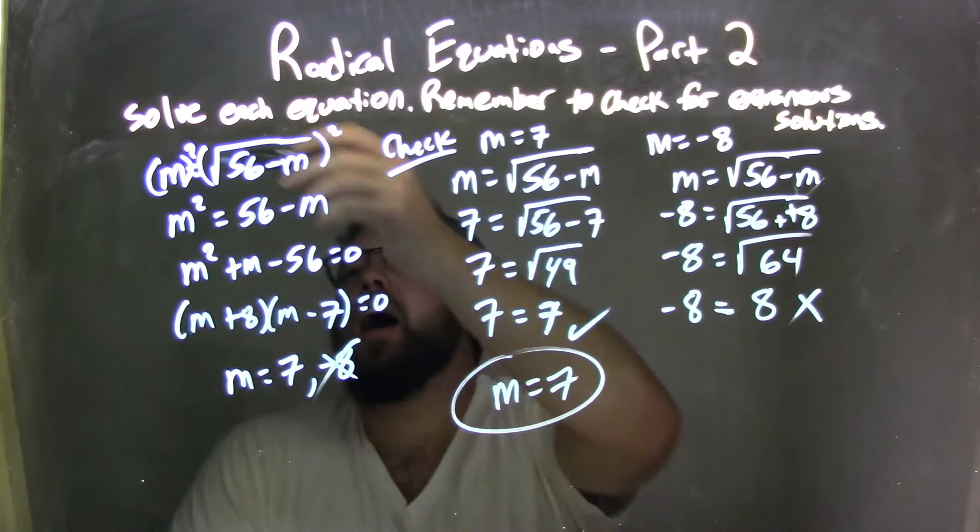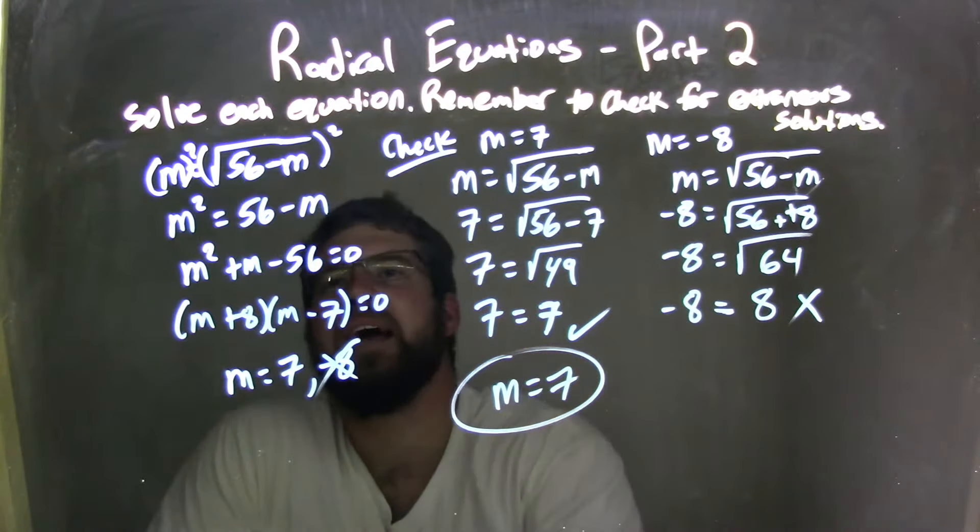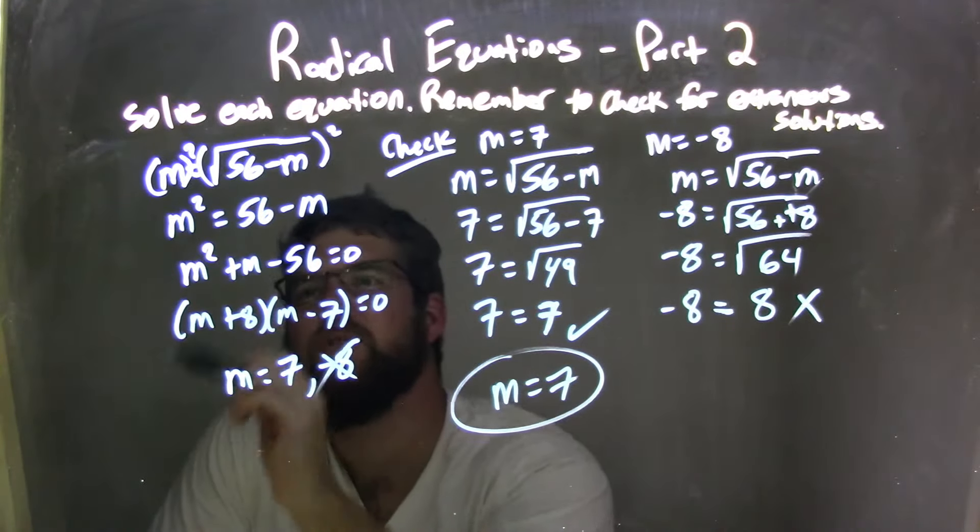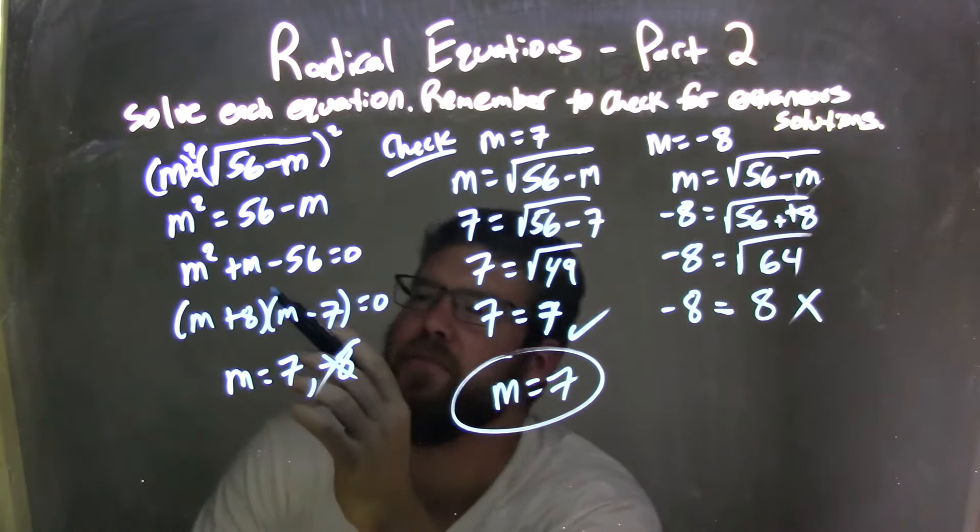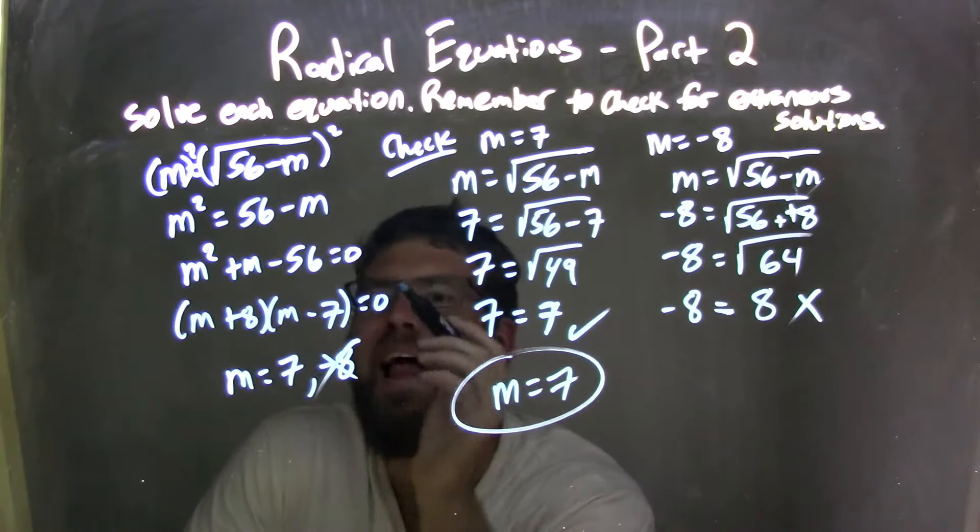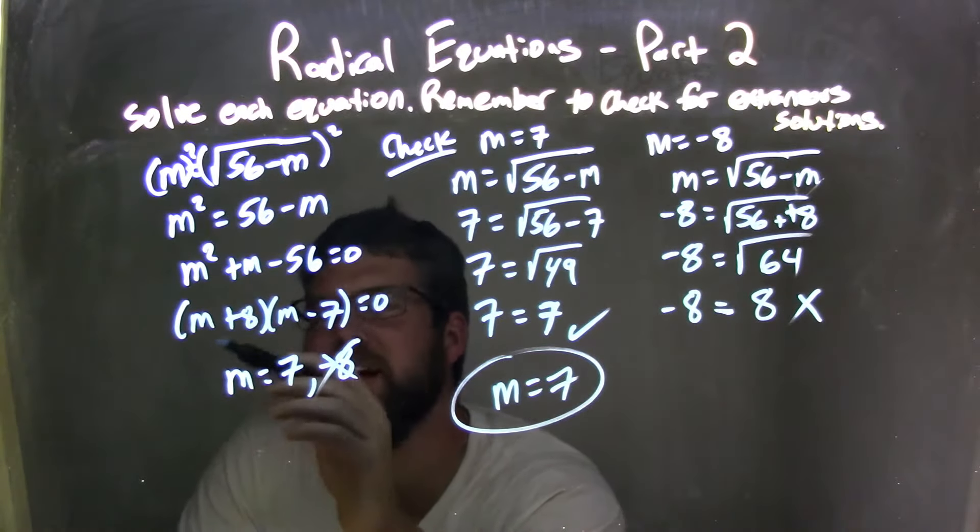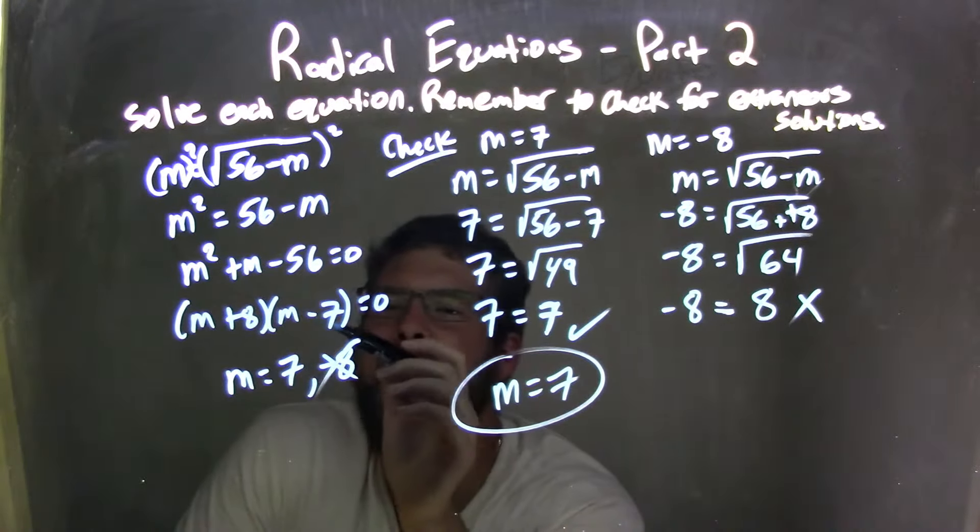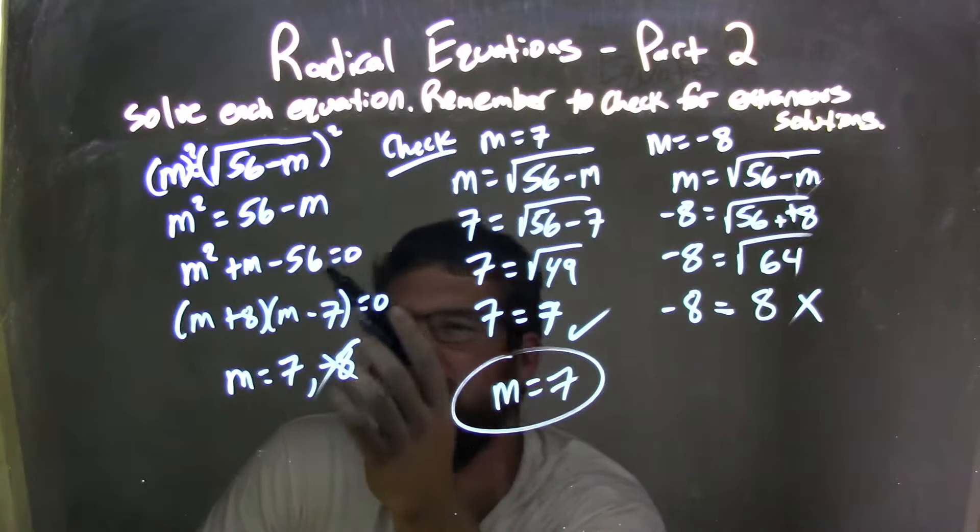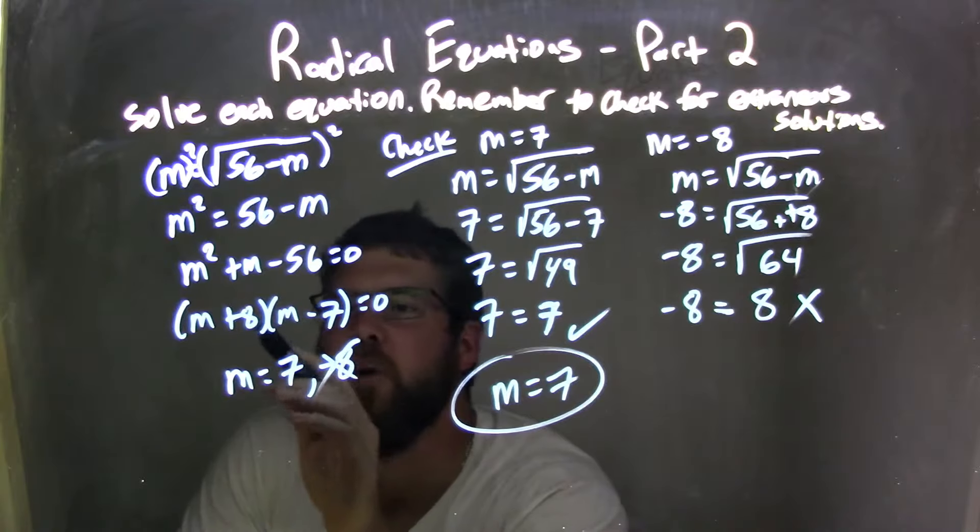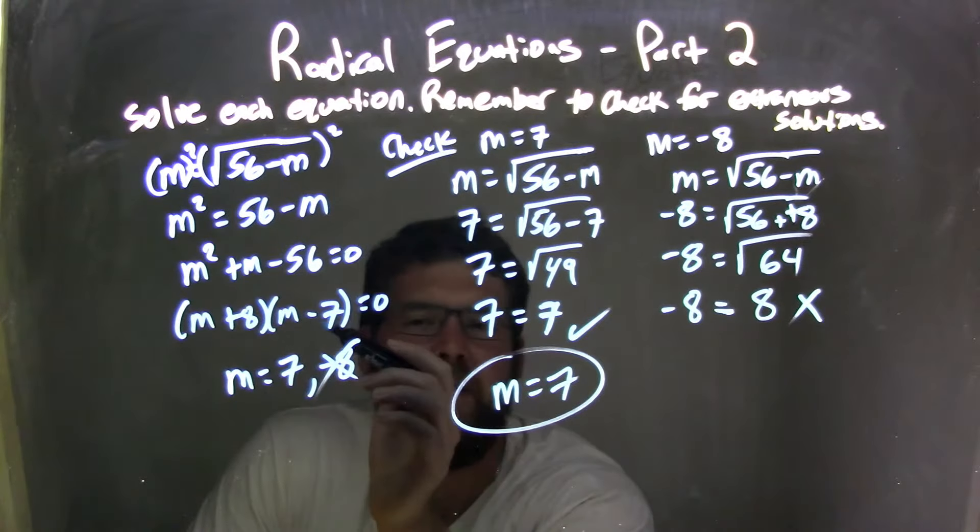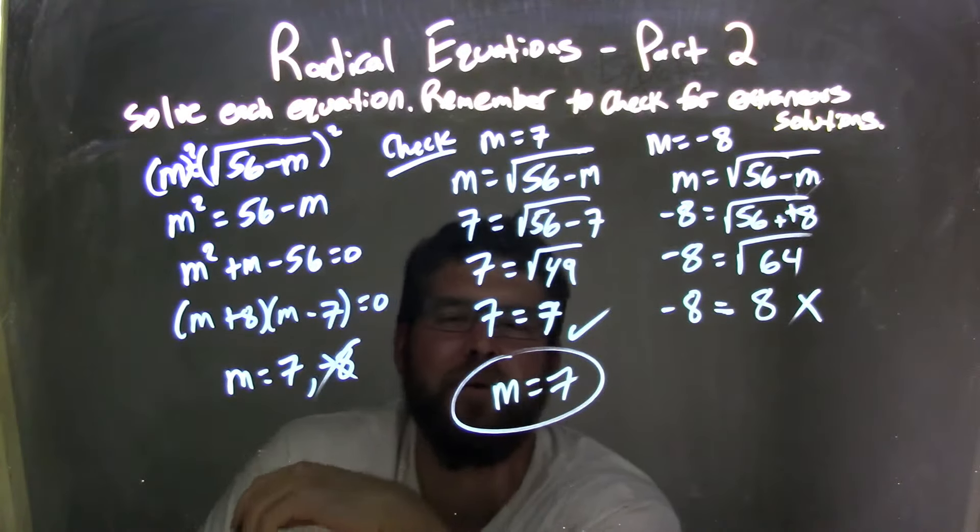Let's recap. m equals square root of 56 minus m. I'm going to square both sides, so I have m squared equals 56 minus m. Then I'm bringing everything over to the left: m squared plus m minus 56 equals 0. Then I've got to factor that. m plus 8 and m minus 7 is what that factors to. Two numbers multiply to negative 56 but add to m. So from there, I set both parts equal to 0. I got m equals 7 and m equals negative 8. Got to check both of them.